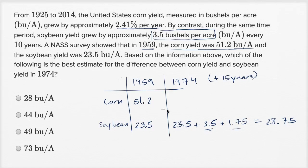Now corn, what's corn going to be? Well, here we're going by a percentage every year. So this is going to be 51.2. And we are growing, we're going to multiply this times 1.0241. If you're growing by 2.41%, that's equivalent to multiplying by 1.0241. You keep what you have, and then you add 2.41%. And you're going to multiply that by as many years as you have. So it's going to be to the 15th power.